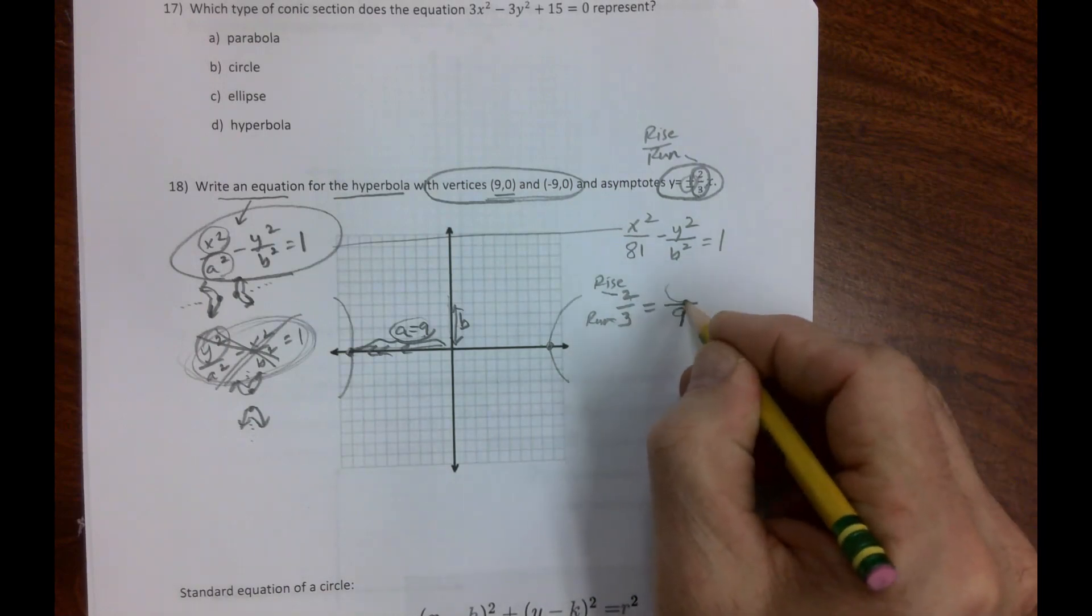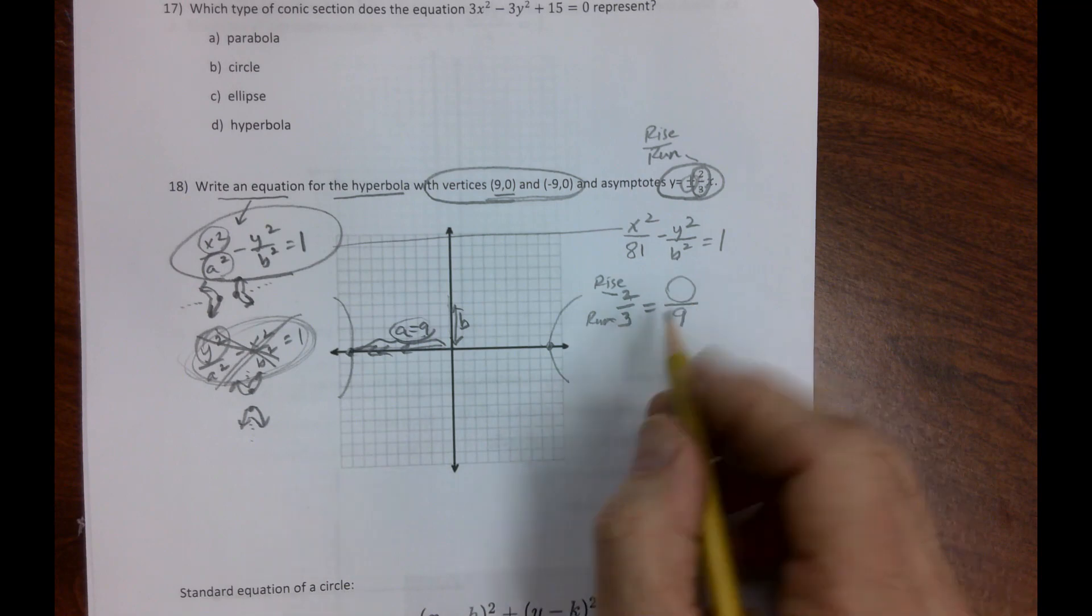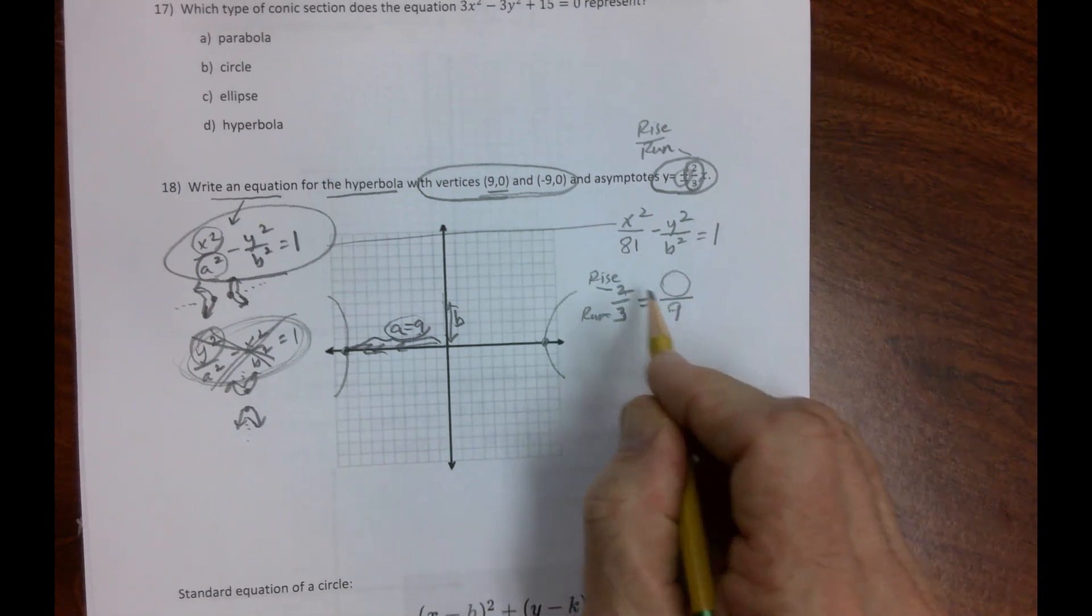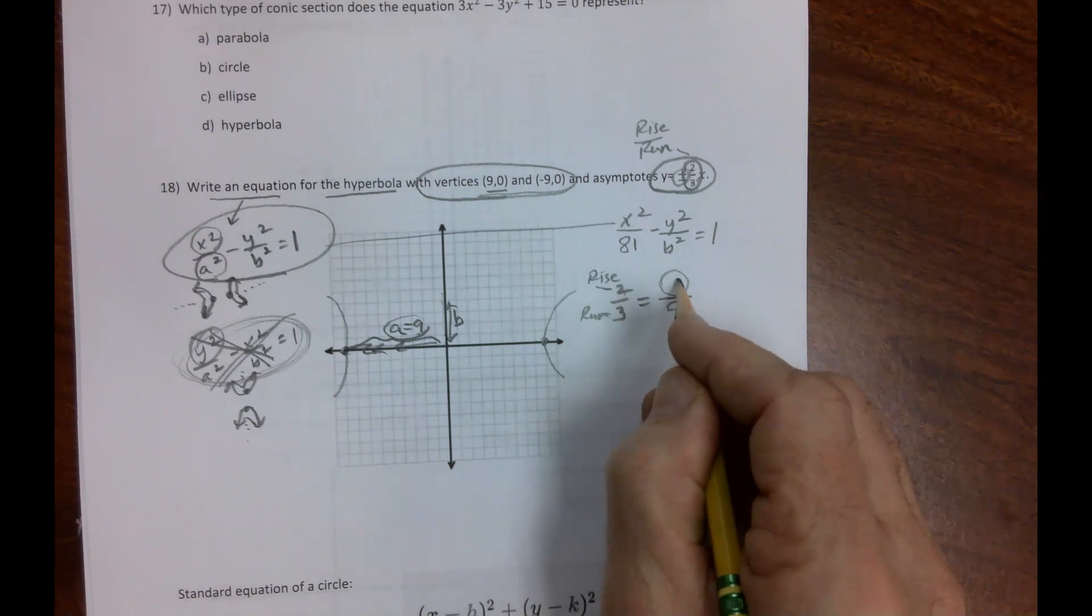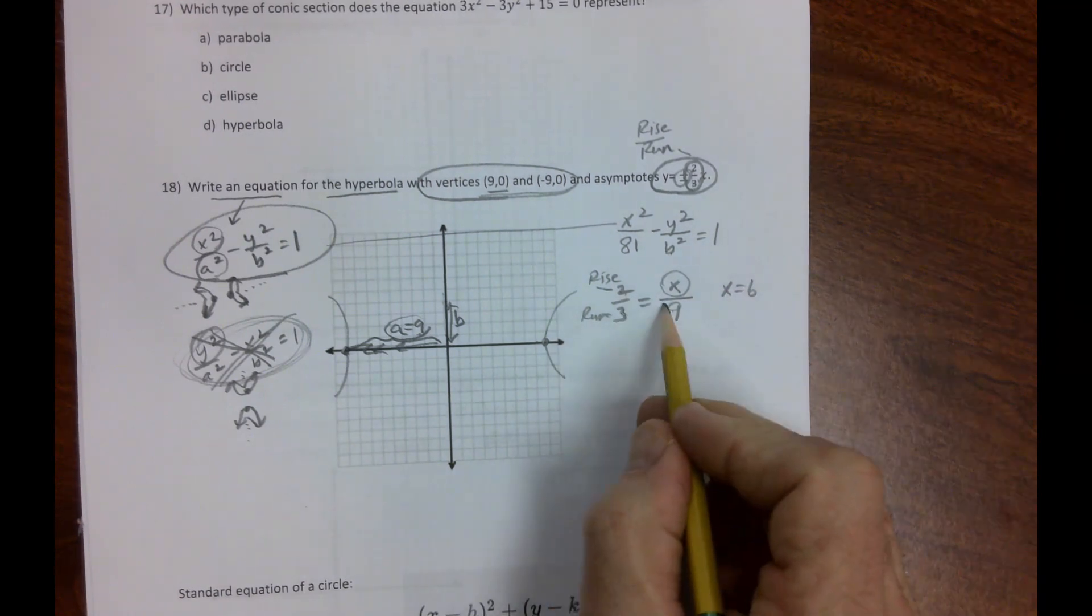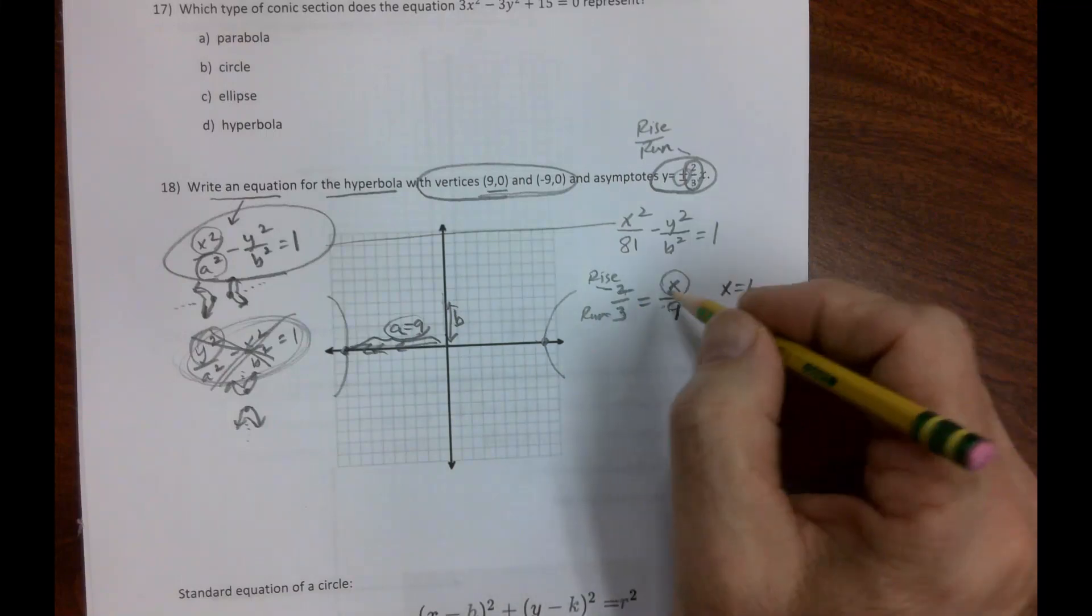I'm ignoring the plus/minus for now. I'm just trying to figure out what needs to be up here. There's really three ways to go at it. Number one: 3 times what is 9? Three. So 3 times 2 is 6, so I'm going to put an x there for now.